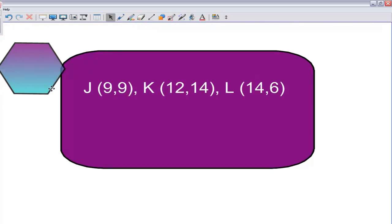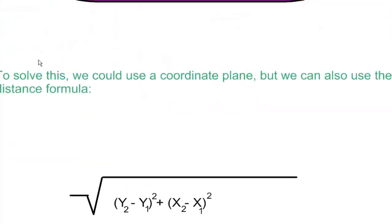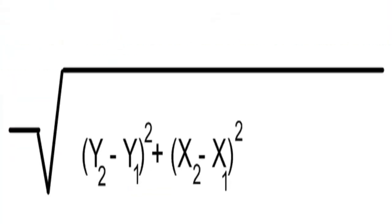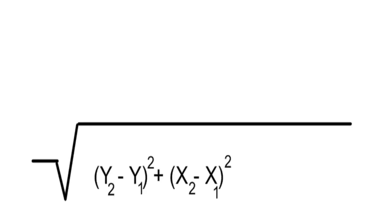So to solve this problem we are going to use the distance formula, also known as the square root of (y₂ minus y₁) squared plus (x₂ minus x₁) squared.